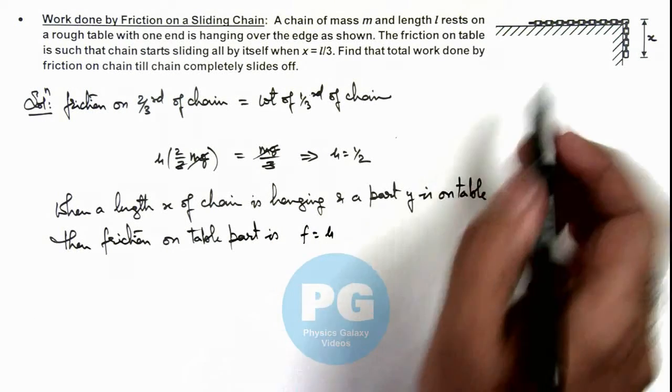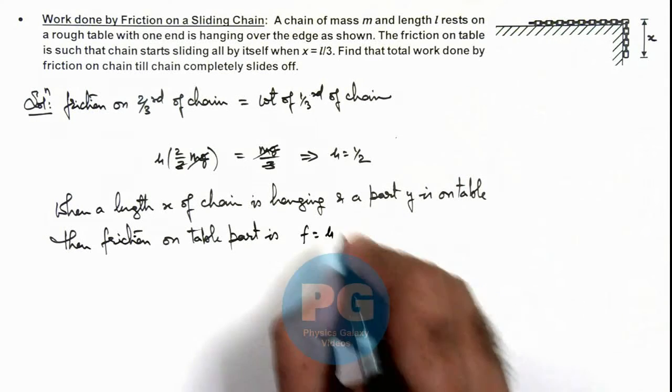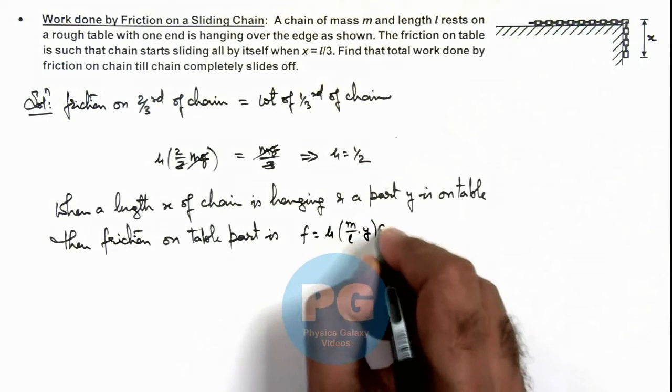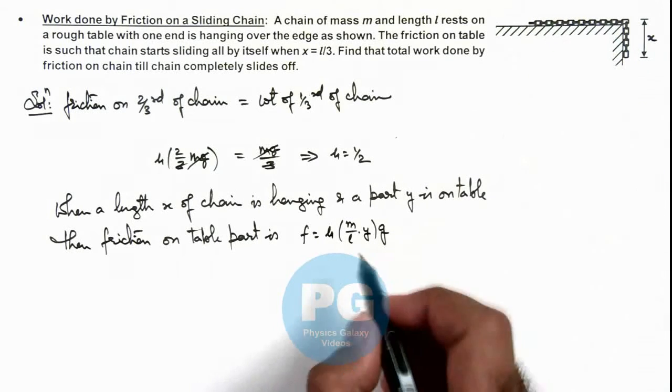μ multiplied by the normal reaction acting on the part of chain which is lying on the table. So this can be written as μ multiplied by (m/l) multiplied by y multiplied by g. This is the mass of the chain which is resting on table that is of length y, so its weight multiplied by friction coefficient.